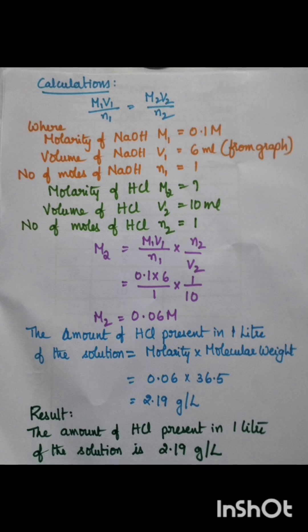The amount of HCl present in 1 liter of the solution can be determined by using the formula: molarity × molecular weight.